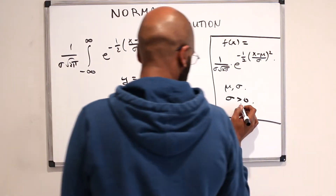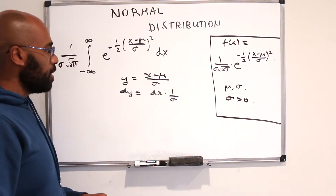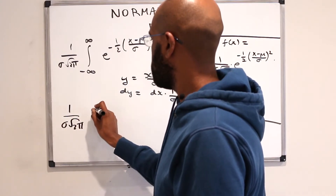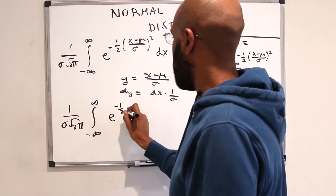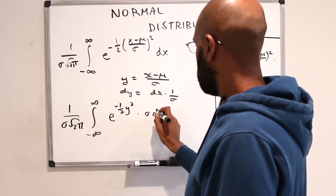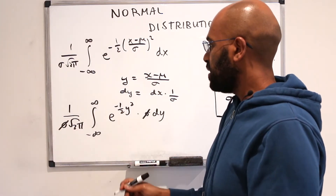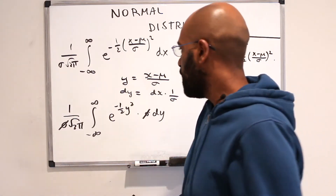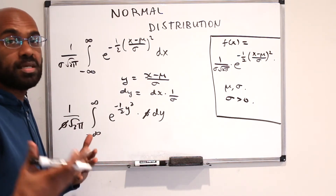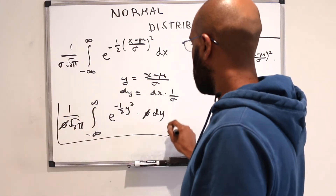We'll let y equal x minus mu over sigma, then dy equals dx times one over sigma. We assume sigma is strictly greater than zero. As x goes to infinity, y goes to infinity, and as x goes to negative infinity, y goes to negative infinity. Making that substitution, the integral becomes one over sigma root 2 pi times the integral from negative infinity to infinity of e to the negative one-half y squared dy, and the sigma factors cancel, leaving an integral independent of mu and sigma.